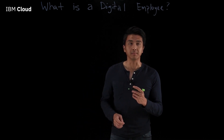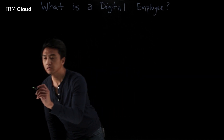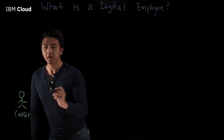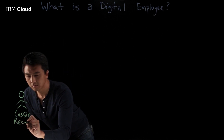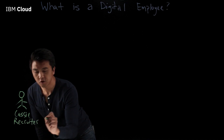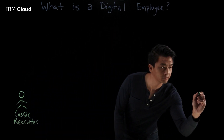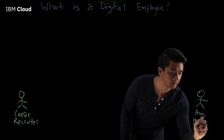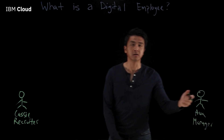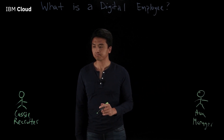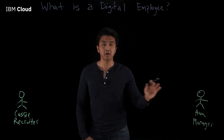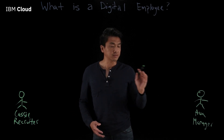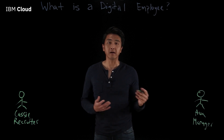Let's start by looking at an example. I'd like you to meet Cassie. Cassie is a recruiter. She helps people like Ava. Ava is a manager and Ava is looking to hire for her team. Cassie helps Ava with the end-to-end hiring process, and among other things that she does, she helps Ava look for candidates for her job.